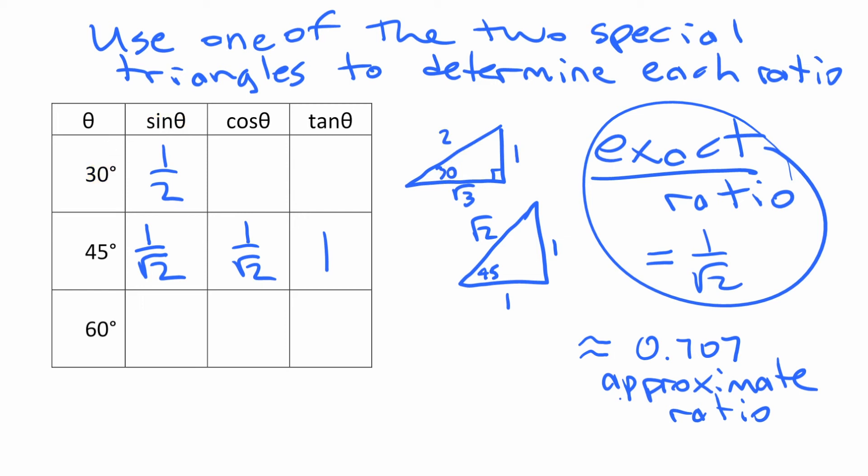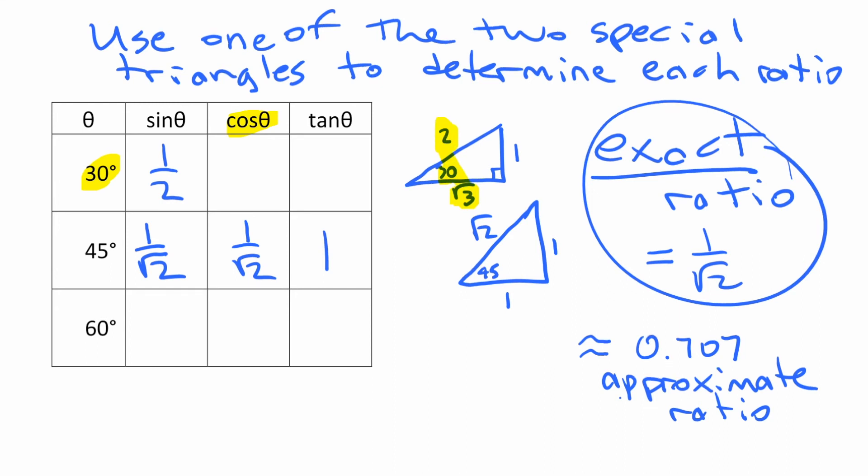If we want cosine of 30, we're going to still look from that 30, but we're looking at the adjacent root 3 over 2, root 3 over 2, and then tangent of 30, we look from that same angle. Opposite, 1 over adjacent root 3 for 1 over root 3.